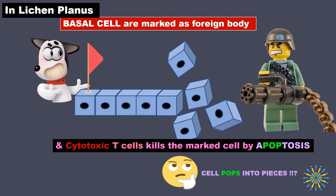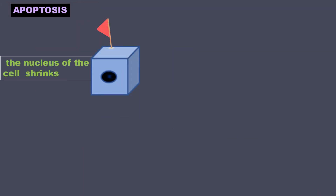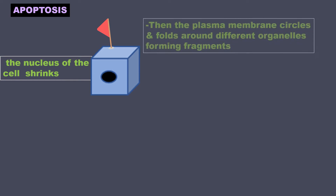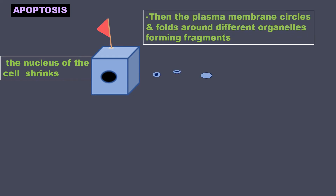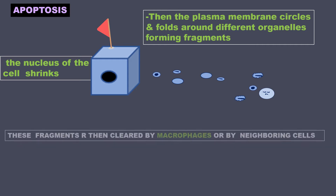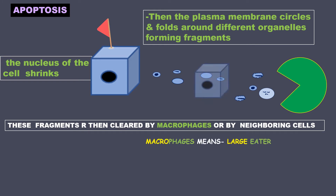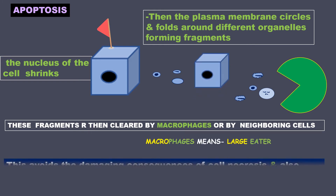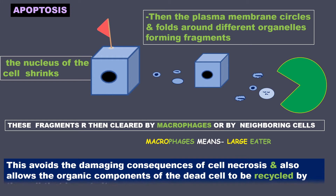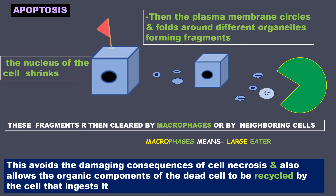During apoptosis, the nucleus of the cell shrinks, then the plasma membrane circles and folds around different organelles and forms fragments. These fragments are then cleared by macrophages, i.e., large eaters, or by neighboring cells. This clearing up avoids the damaging consequences of cell necrosis and also allows the organic components of the dead cells to be recycled by the cells that ingest them.